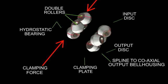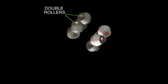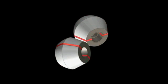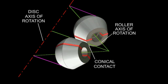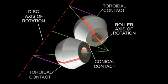The rollers are machined with both toroidal surfaces and conical surfaces. The toroidal surfaces roll on the toroidal discs, while the conical surfaces roll on each other. The center line of the conical contact passes through the intersection of the rollers rotational axes.